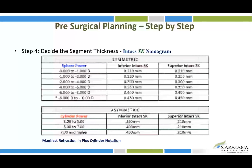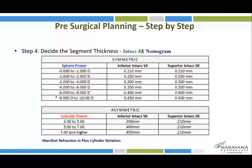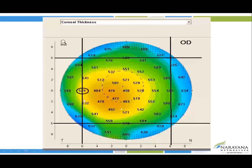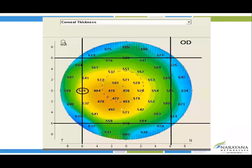Ring size is determined from normograms for traditional INTACS or SK rings. With experience, rings invariably underperform, so it is better to choose one ring size higher. Insertion depth is critical — in the 7 mm zone, the thinnest pachymetry is identified (e.g., 540 microns), and 70% of that value is the insertion depth (approximately 370 microns), leaving 140–150 microns below the INTACS to minimize perforation risk. The Pentacam HR from Oculus has a program specifying insertion depth at different zones for different ring sizes.